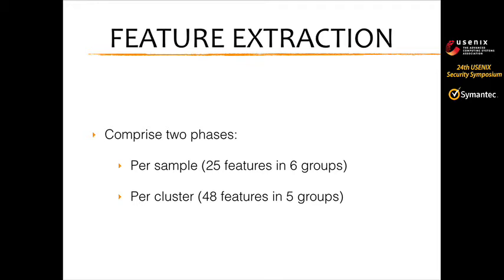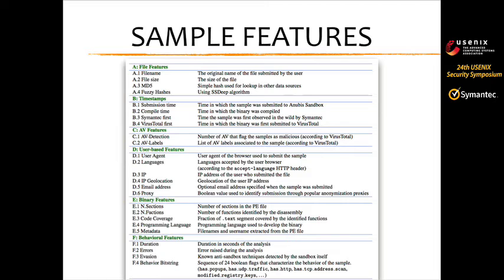There is a feature extraction step composed of two phases. First we extract features for individual samples, then we aggregate those features to extract features for a single cluster. The sample features are grouped into six categories containing a total of 25 features: file features, timestamps (which are really important for extracting submission timelines and investigation intelligence), antivirus features from external feeds like VirusTotal, user-based features such as user agent and IP address of the submitter.